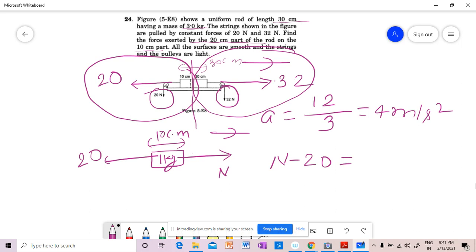Now we have to get the value of N. So N minus 20 equal to 4, therefore N = 24. This is how much the 20 cm part forces on the 10 cm part. This is the answer, 24 N.